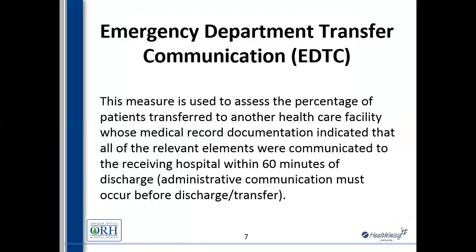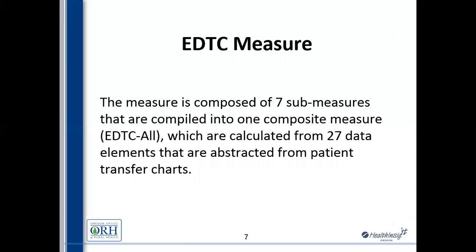The EDTC measure is used to assess the percentage of patients transferred to another healthcare facility out of our emergency department. It focuses on what medical record documentation accompanied them within 60 minutes. There are quite a number of relevant elements that need to be communicated, and one that needs to be communicated prior to discharge or transfer. The EDTC measure is composed of seven sub-measures, all compiled into one composite — EDTC All — calculated from 27 data elements.